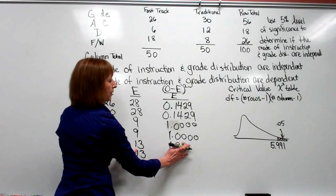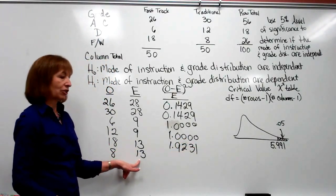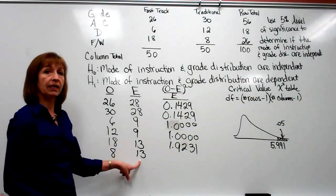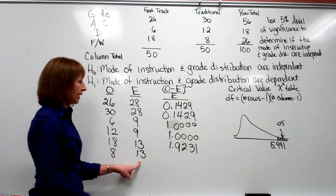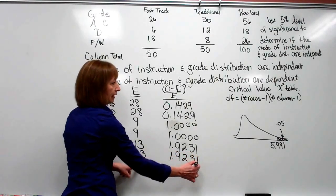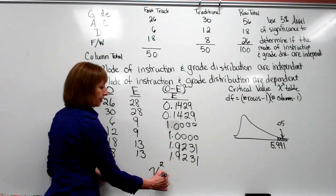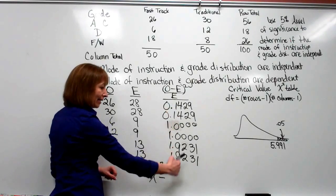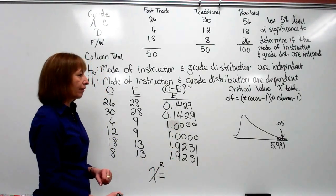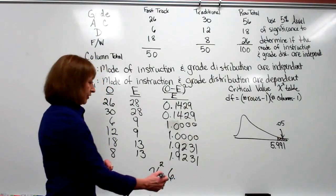For traditional grade F or W: 8 minus 13 is negative 5, squared is 25, divided by 13 gives 1.9231. To get our test statistic chi-squared for this problem, we add up all of these values. When we add all of our numbers, our chi-squared test statistic is 6.132.